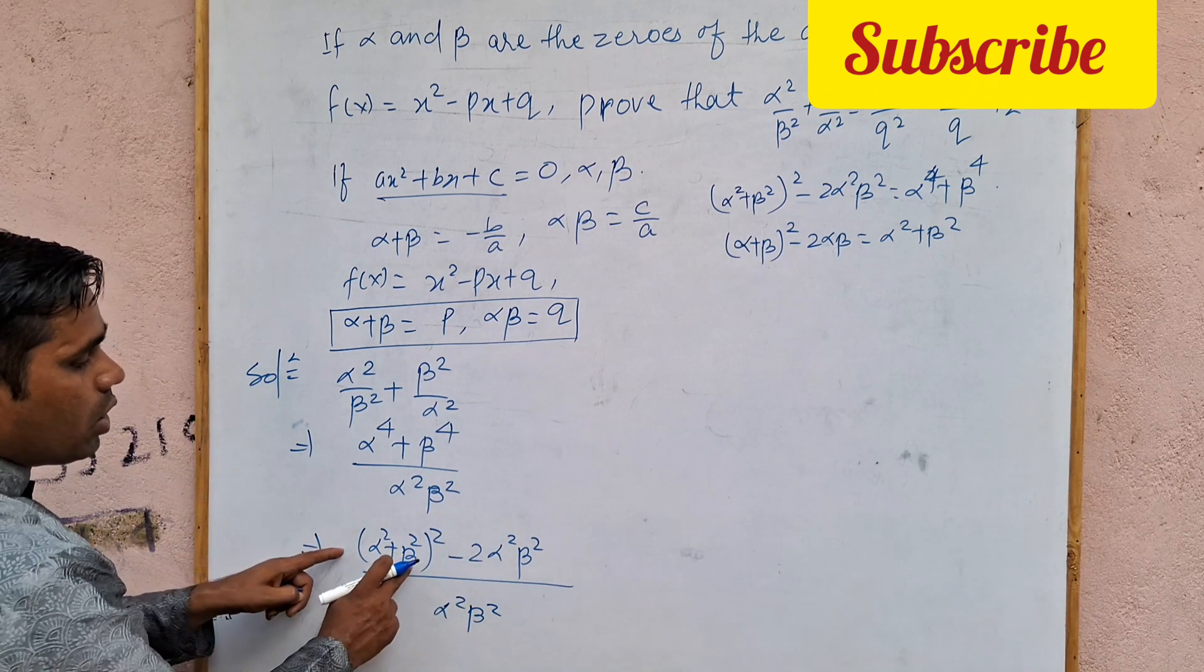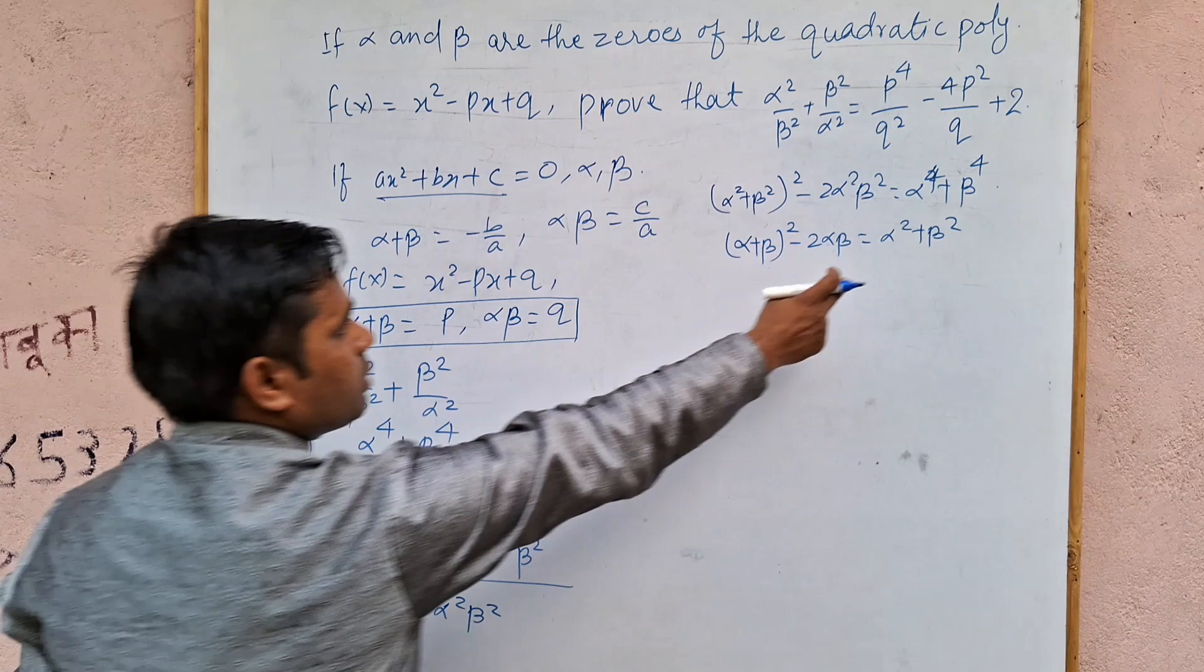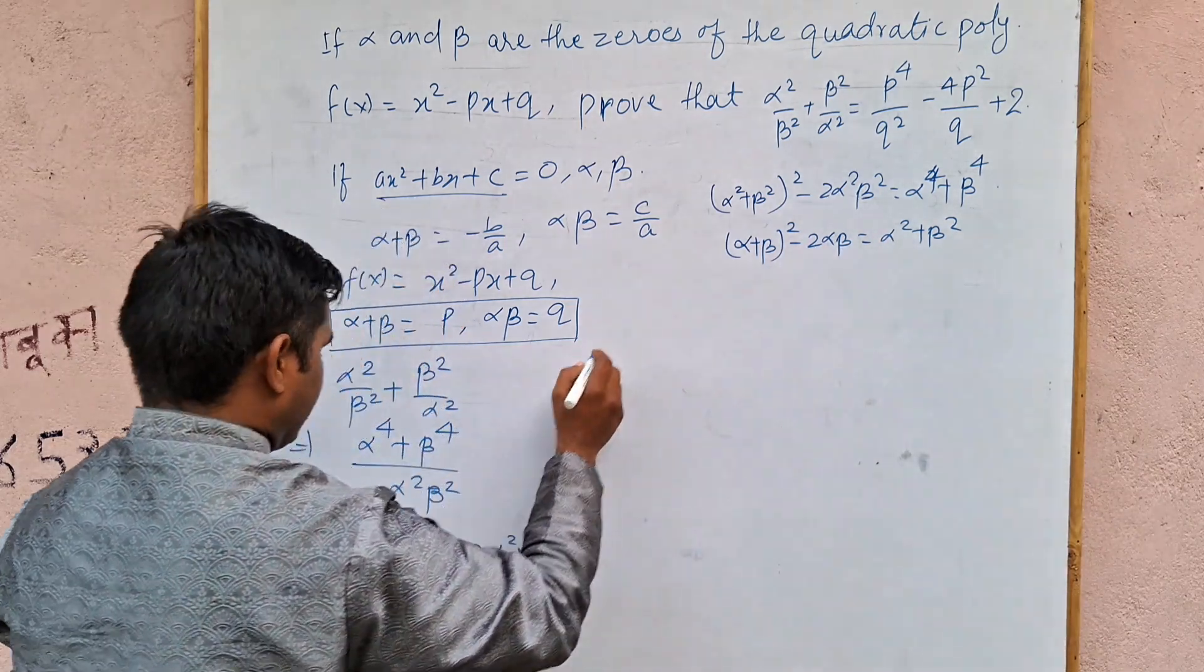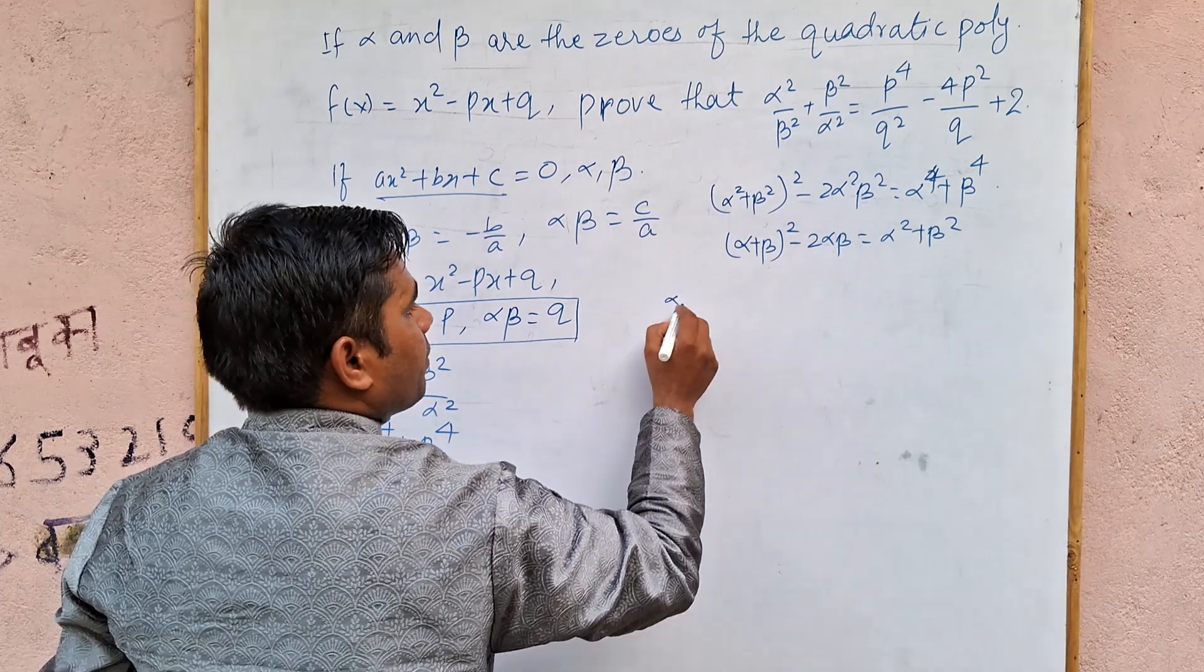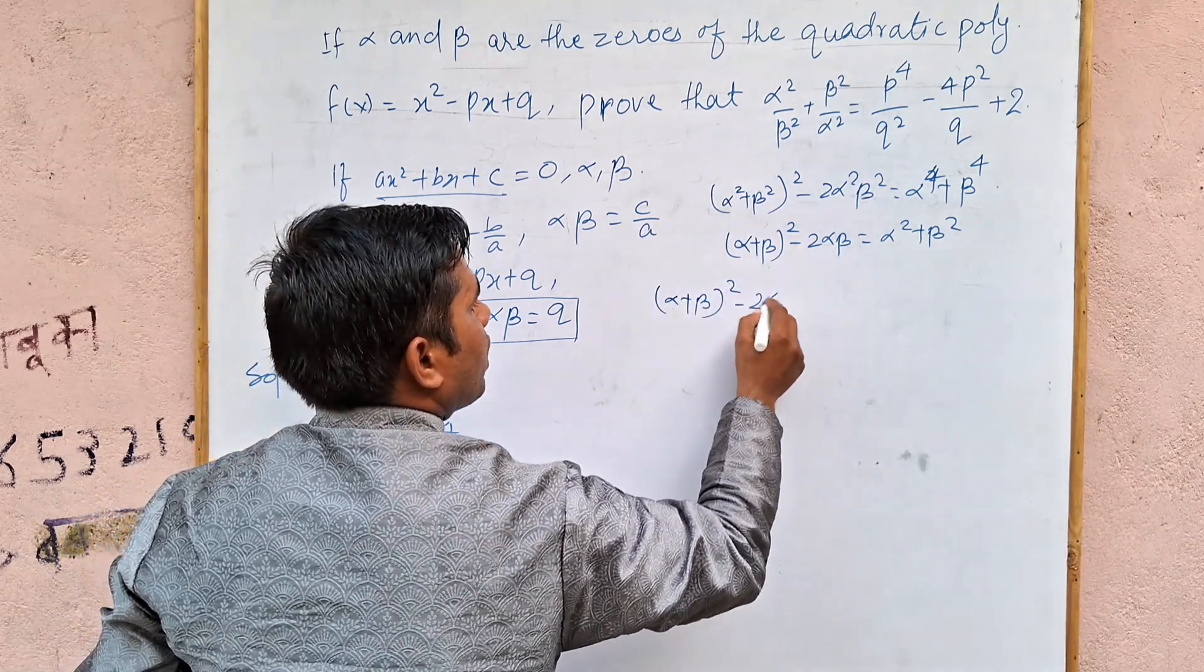Now, we divide both. We break it. Alpha square plus beta square. What do we do? Now, we see here. What do we do? How do we do? Alpha plus beta, whole square minus 2 alpha beta.